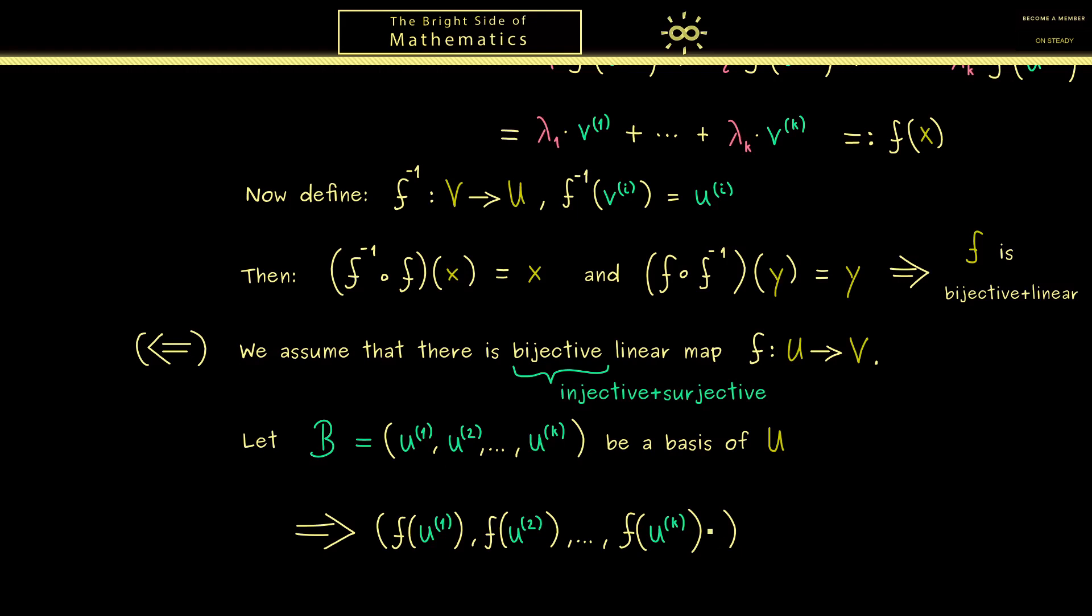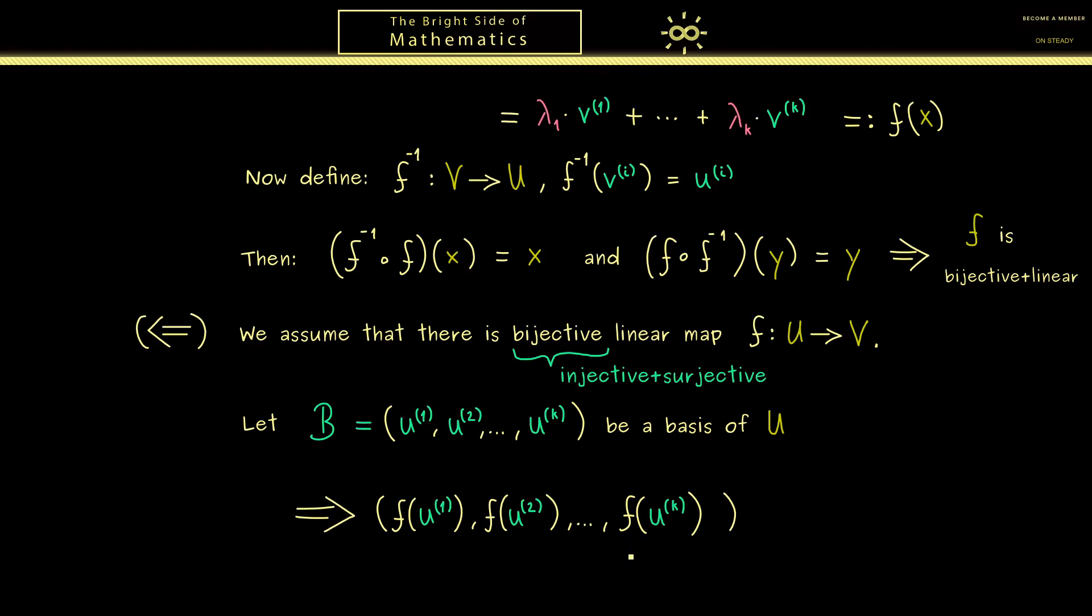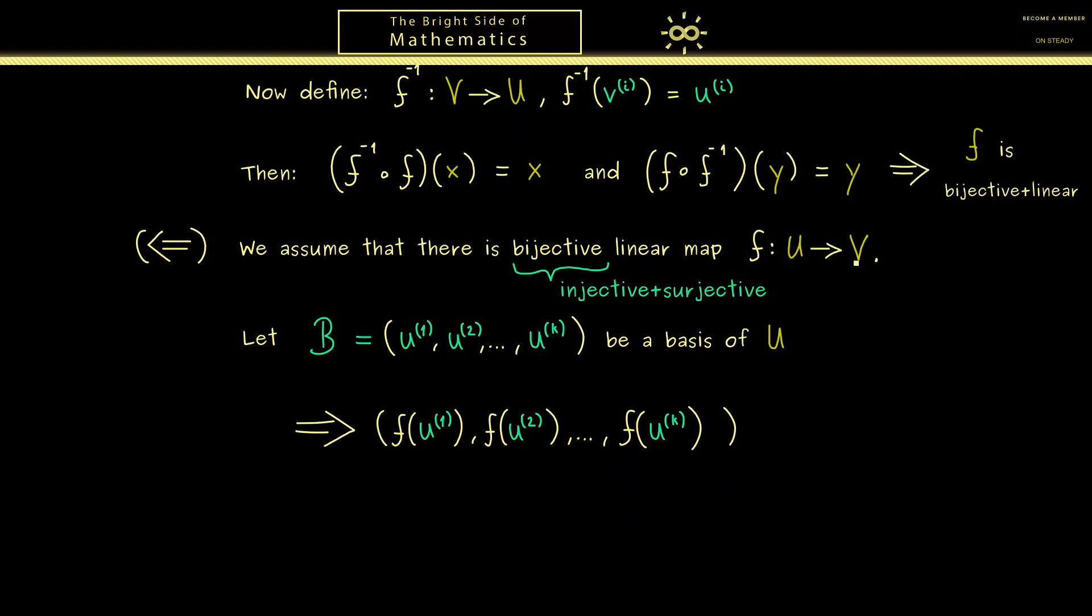Ok and now the question is, is this family linearly independent and does it span V? If we have both these things then we have a basis in V. Now in fact it's not hard to show that we have these two properties exactly because we have the injectivity and the surjectivity.